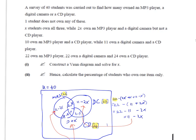The question reads as follows: A survey of 40 students was carried out to find how many owned an MP3 player, a digital camera, or a CD player. One student does not own any of these. X students own all three, while 2x own an MP3 player and digital camera but not a CD player, and so on.